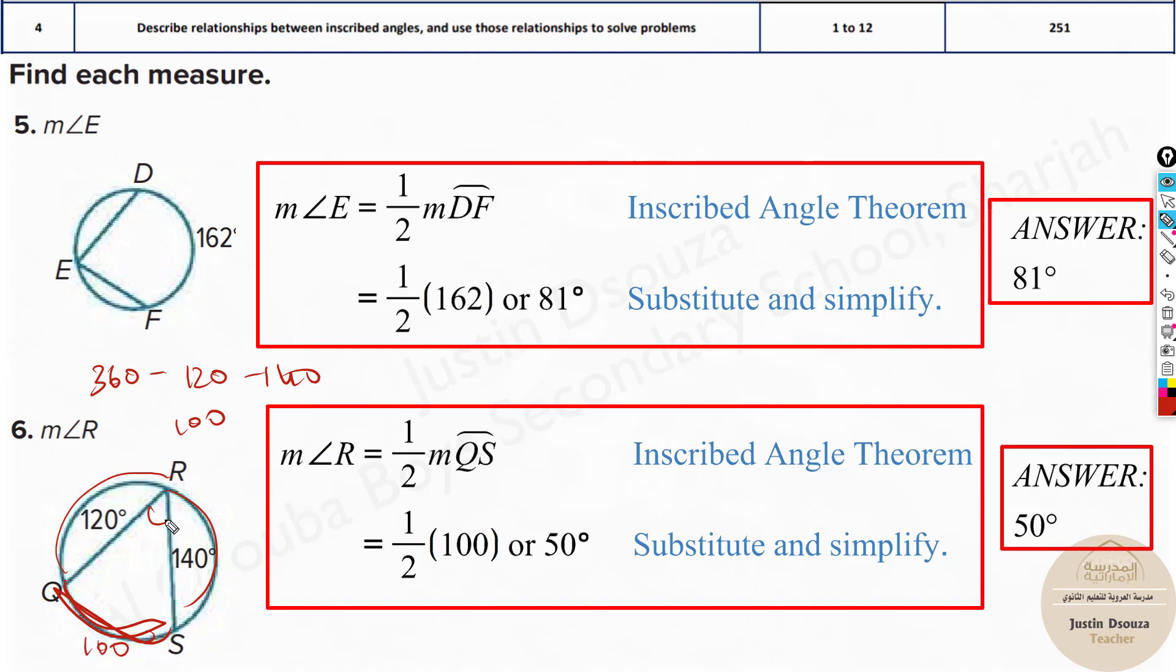But that arc is 100. So what is the measure of angle R? Half of 100 is 50 degrees. So that is how we can solve it up.